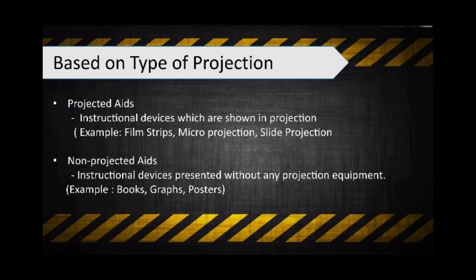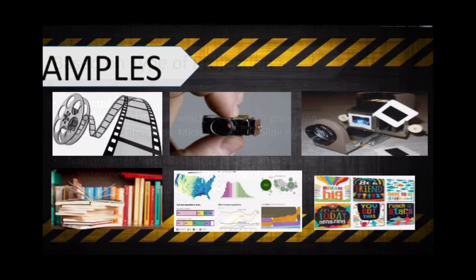Based on type of projection: projected aids are pictures shown upon a screen by the use of certain types of machines. Non-projected aids are visual instructional devices which are simply presented without any projection equipment. They translate abstract ideas into more realistic formats and allow instruction to move from verbal presentation to a more concrete level. Examples include film strips, micro-projection, slide projection, books, graphs, and posters.